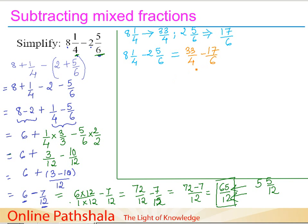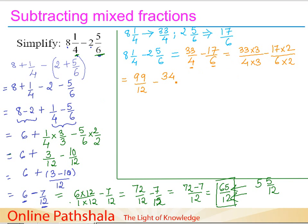With denominators 4 and 6, we again use LCM 12. We get 33 times 3 over 4 times 3, minus 17 times 2 over 6 times 2, which simplifies to 99/12 minus 34/12. Subtracting, 99 minus 34 gives 65, so the result is 65/12.